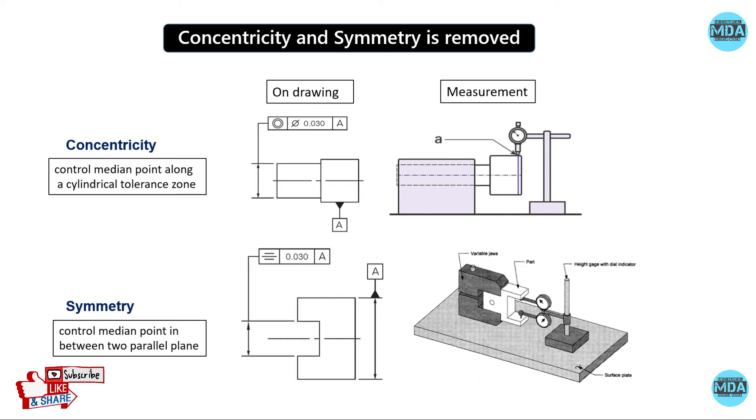The symbol and definition are removed from GD&T. Now instead of concentricity and symmetricity symbols, we can use positioning to position the feature. Positioning provides direct control to the feature.